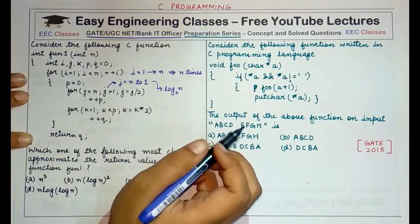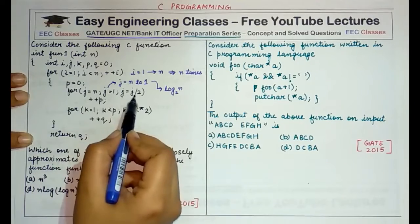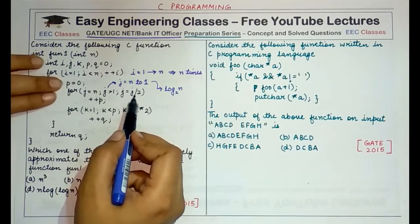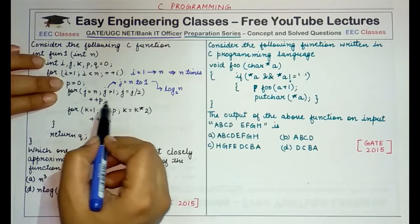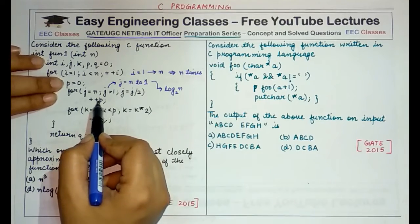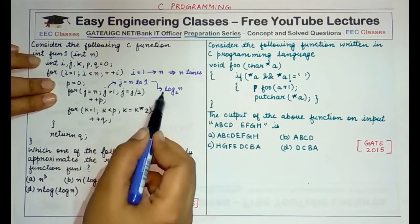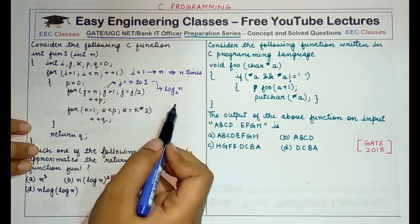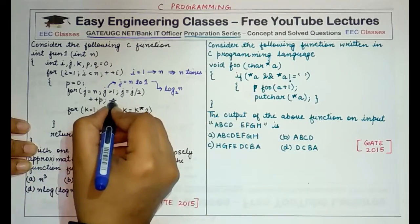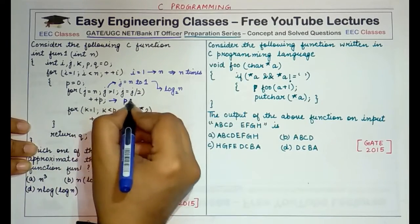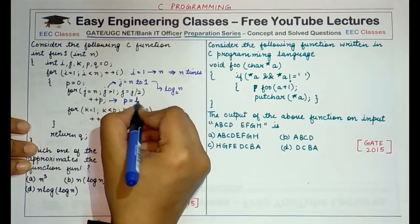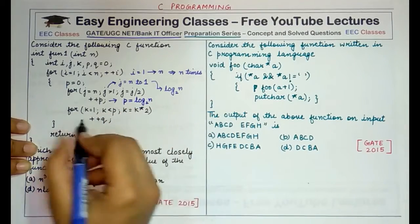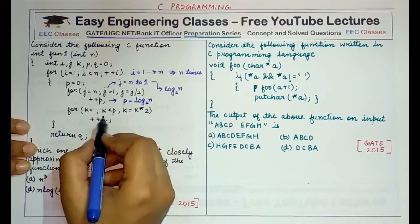So j goes: n, n/2, n/4, n/8, and so on. Whenever a new iteration of the j loop starts, the value of p is incremented. If initially p was 0, it would be incremented log n times. Therefore the value of p after this loop ends would be log base 2 of n.